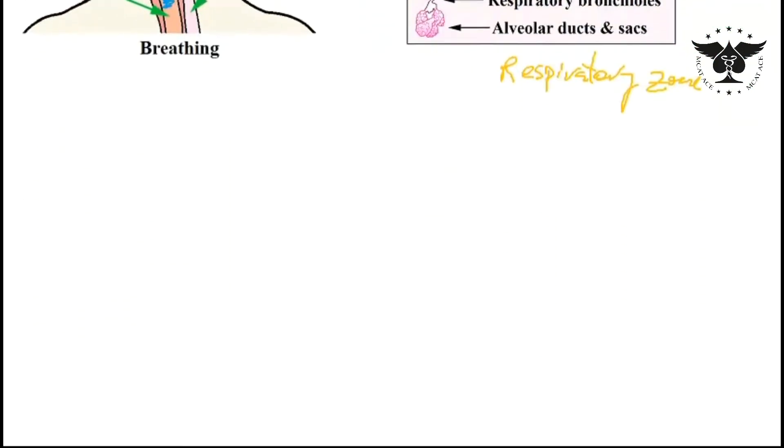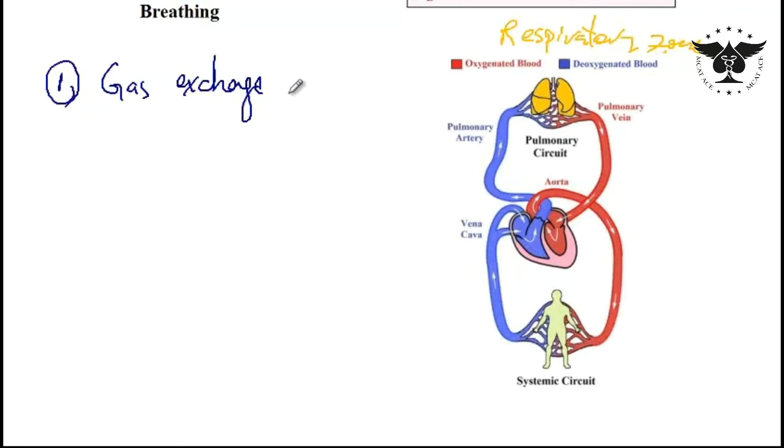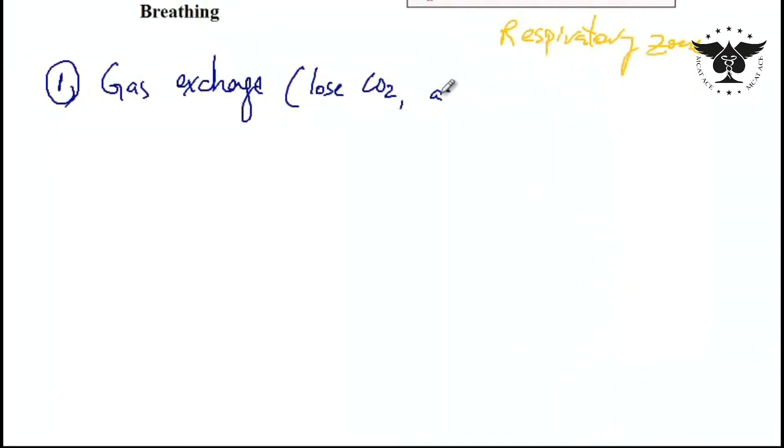With the general outline of structures of the respiratory system now we can go over different functions. As you're aware, the number one function of the respiratory system is gas exchange where CO2 will be exhaled while O2 will be inhaled in order to allow oxygenated blood to return back to the left side of the heart with the help of the pulmonary vein.